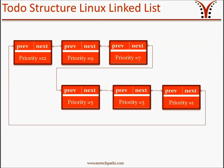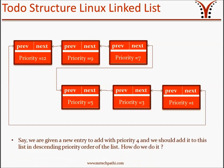As you can see, the priority values of each entry in the doubly linked list are 12, 9, 7, 5, 3, and 1. Say we are given a new entry to add with priority 4, and we should add it to the list in descending priority order of the list. How do we do it?